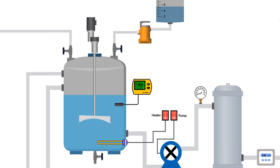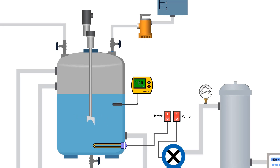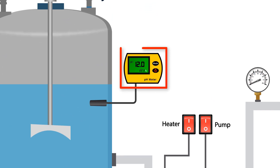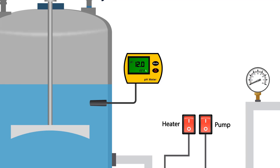Turn on the agitator to make the solution homogeneous. Monitor the pH meter. The solution pH should be between 11 and 12.